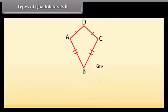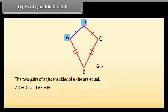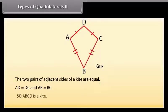The last one is kite. The two pairs of adjacent sides of a kite are equal. Here AD is equal to DC and AB is equal to BC, so ABCD is a kite.